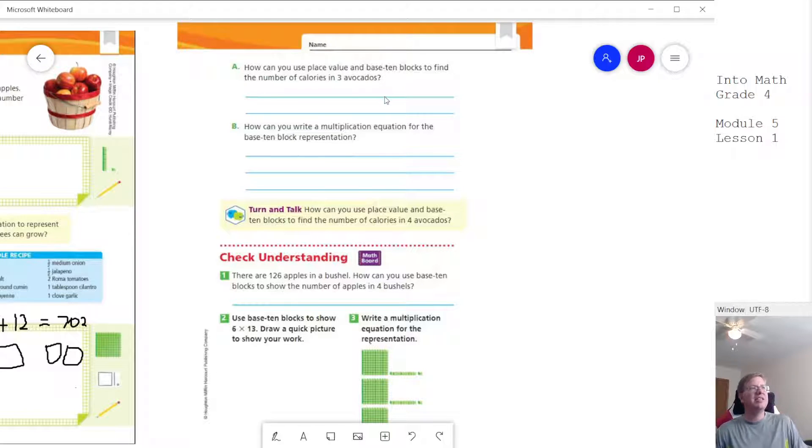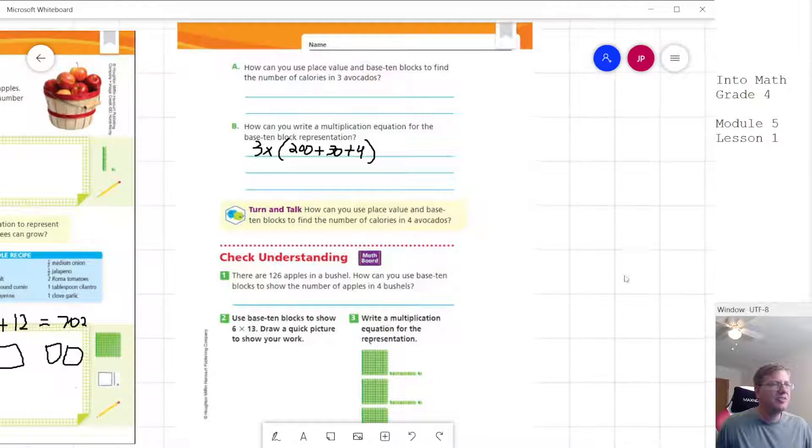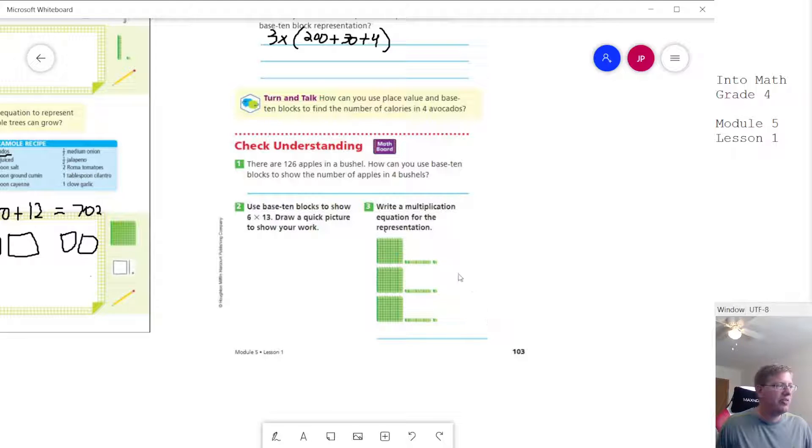All right, and so how could we use place value and base ten blocks to help us? Well, I just showed an example of that. How could we write the multiplication equation? So we could do three times, and then in parentheses, we would do 200, and then plus 30, plus four. And then we could break that apart. So we would get our three times 200 plus three times 30 plus three times four would be the second step. And then we would continue working it out from there. To save time, I won't draw the rest of that.